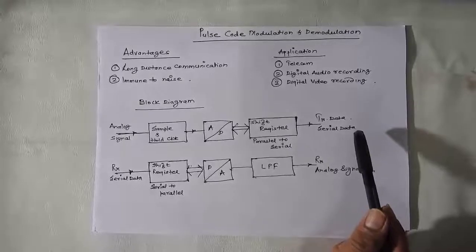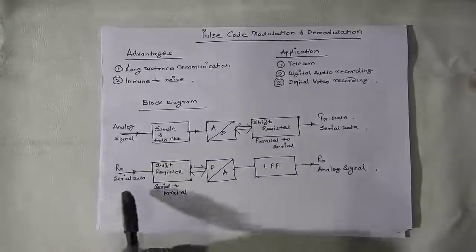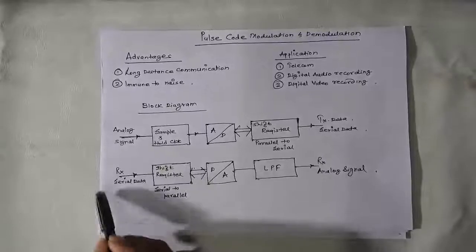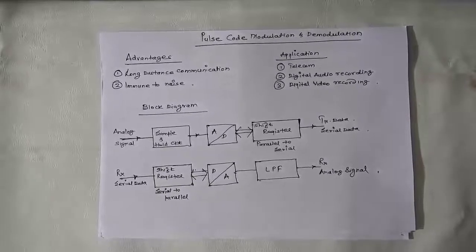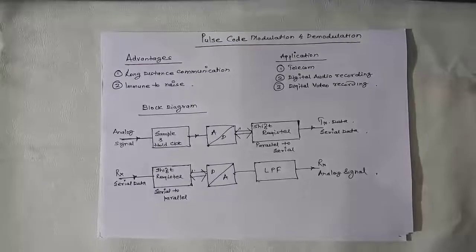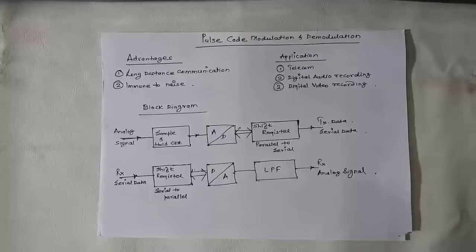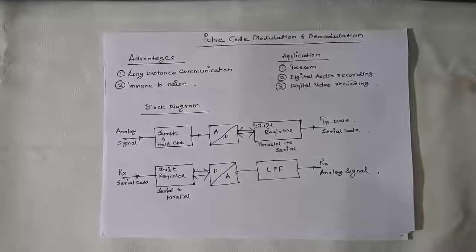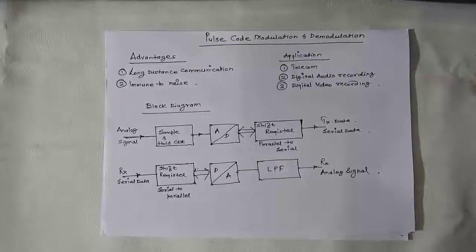When the serial data comes at the receiver end, the first block is again a shift register which converts the serial data into parallel data. All 8 bits are converted back into parallel form.